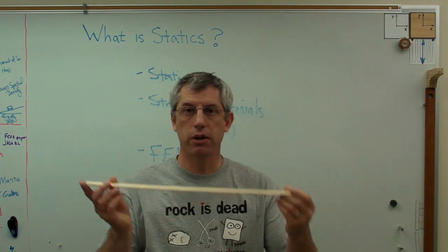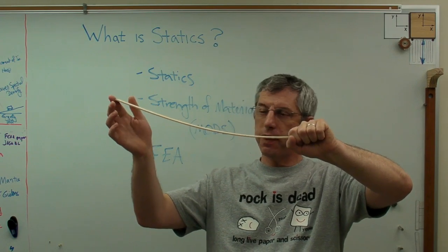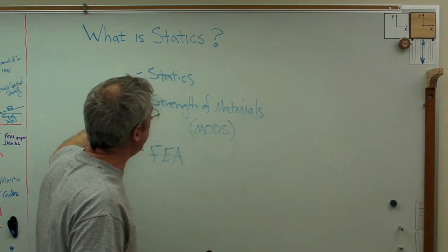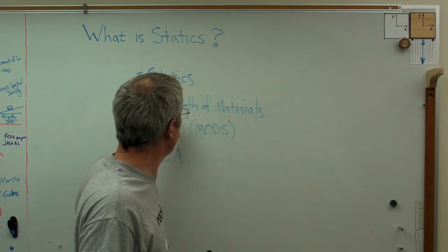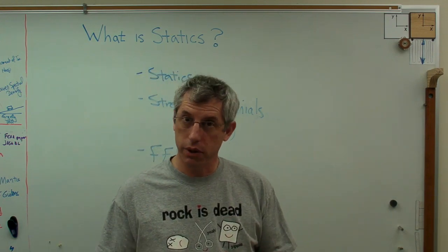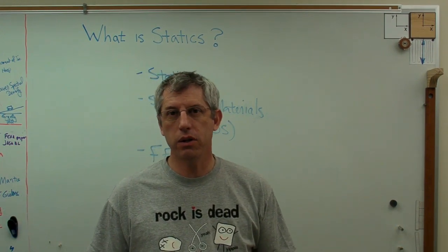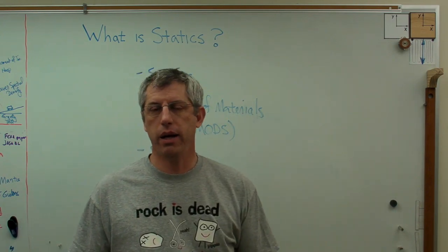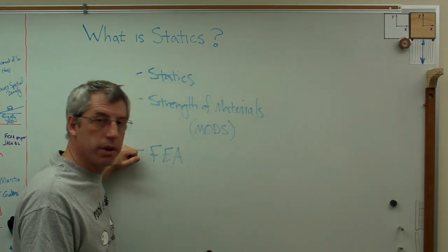That's strength of materials. If this is the airplane wing, it starts to bend up. Now, hopefully not that far, but it bends up under load. The advantage of strength of materials is that you get a more accurate answer than you do with statics because you're taking into account the deformations, which is good. The problem with strength of materials is the math can get pretty nasty. And so, if a structure gets very complex, you can't analyze it by hand anymore. The math is just too difficult.